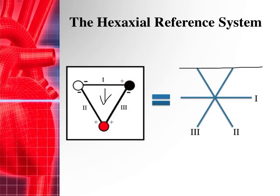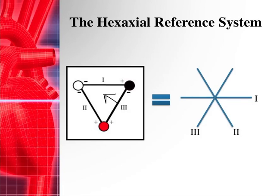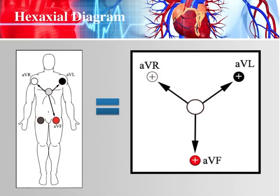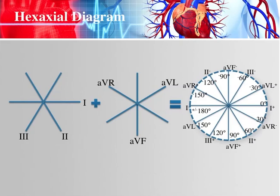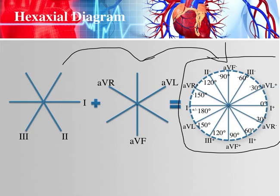Lead I was up here and we dragged it down; Lead II was out here and we dragged it over; Lead III was moved as well — and we make them all intersect right in the middle, because that's how they look at the heart's electrical activity. You can do the same with the augmented leads — aVR, aVL, and aVF — and intersect them in the middle too. Adding the two groups together gives you the hexaxial diagram.